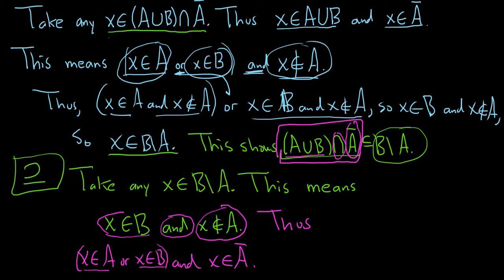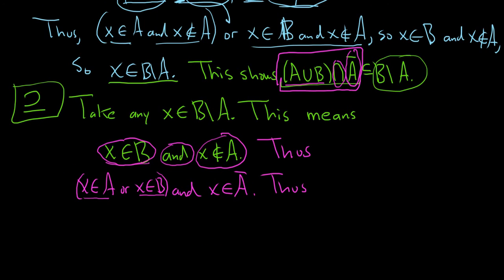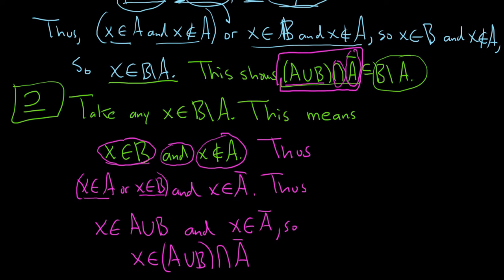So again, this is the step I feel that some people have issue with. So going from x in B to x in A or x in B is allowed because this entire statement will be true as long as one of them is true. So thus, well, what do we have? We have x in A or x in B. That means that x is in the union. And x is in A complement. So what does that mean? That means it's in the intersection. So x is in (A∪B)∩Ā. And so we've taken an element in this set, and we've shown it's in this set. So thus, B\A is contained in (A∪B)∩Ā.